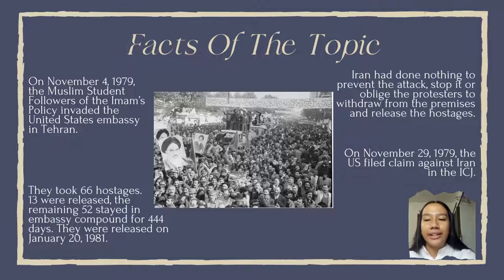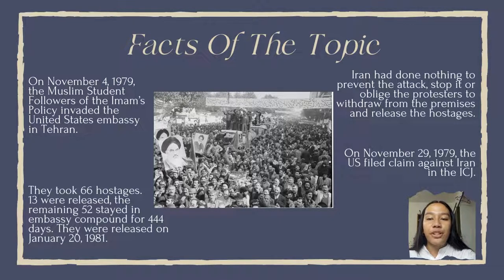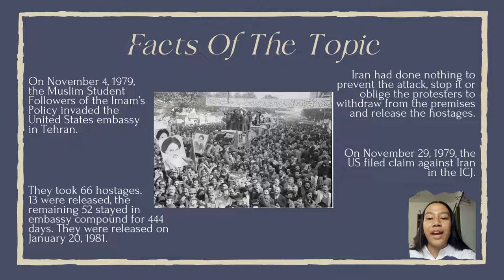The hostages were released on January 20, 1981. Iran announced that hostages would remain until the U.S. returned the former Shah for trial. On November 29, 1979, the U.S. filed a claim against Iran in the ICJ, alleging violation of the Vienna Convention on Diplomatic Relations and Consular Relations.